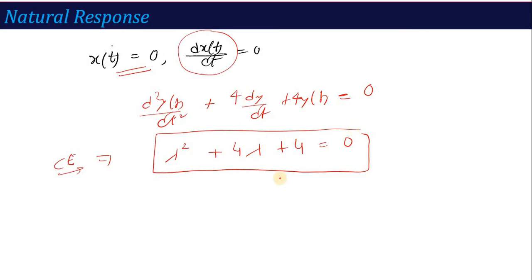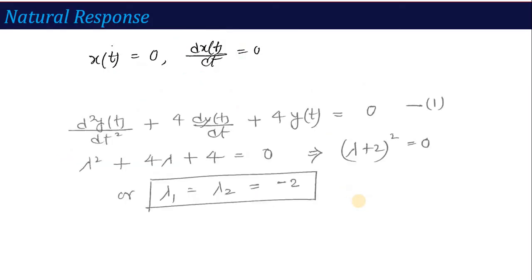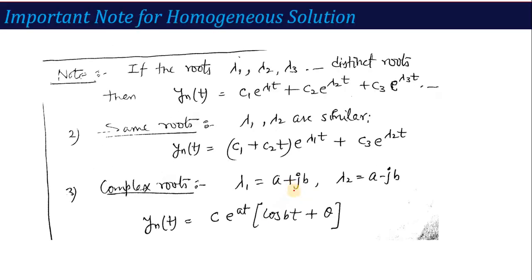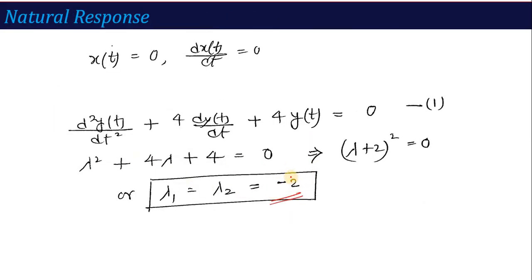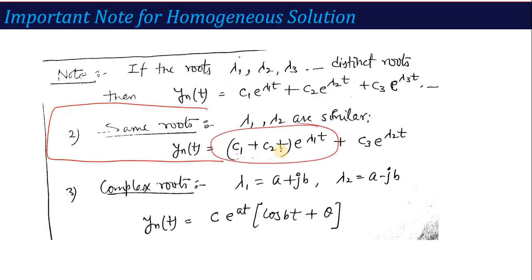Solving this equation, it becomes (λ + 2)² = 0, which means the roots are λ₁ = λ₂ = −2. There are three different conditions for roots: distinct, similar, or complex. This time we are in the second category — the roots are similar (repeated). When two roots are similar, the homogeneous solution takes the form (C₁ + C₂t)·e^(λ₁t), so here it is (C₁ + C₂t)·e^(−2t).